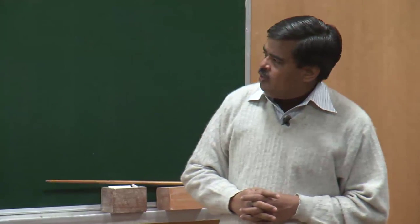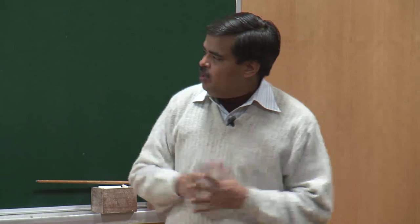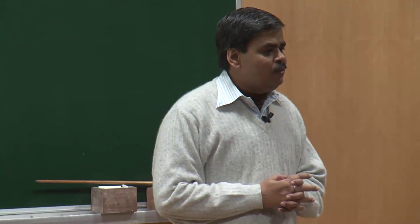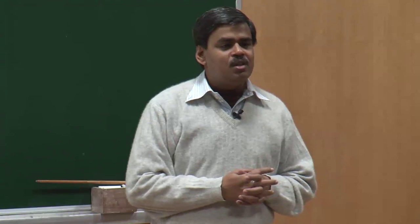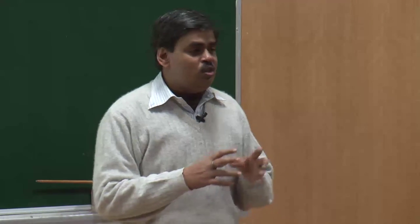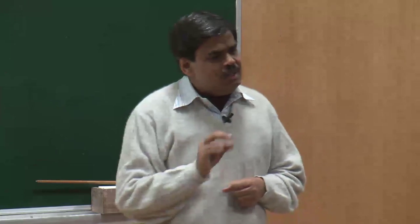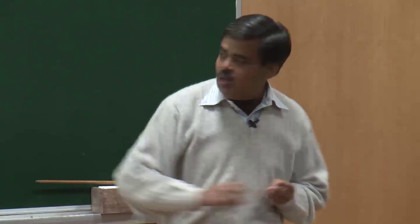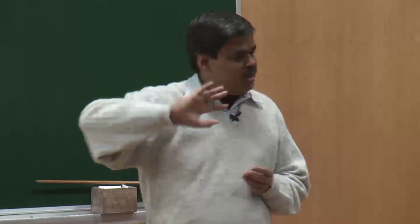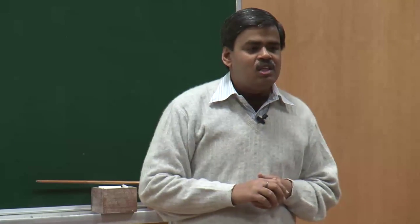Then the fourth set of reactions are called socially unacceptable overt reactions — you perform certain types of actions which do not have social approval. Hence, whether you are normal or not, because besides the critical interpretation of normality there is also a social way of looking at behavior. We will look at those behaviors and see whether they are legally acceptable, clinically acceptable, and socially acceptable. That whole category of behavior is socially unacceptable, but we will try to see from the legal and psychological acceptance point of view.